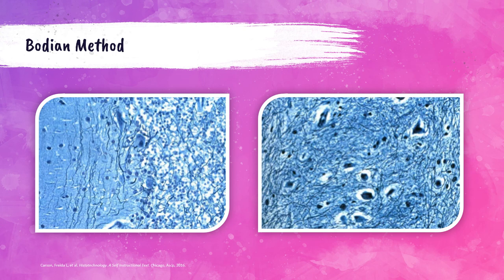A photo with the aniline blue counterstain shows a cerebellum tissue Bodian stained: nerve fibers and nuclei are visible in black. An example of overstaining with the aniline blue counterstain shows that the contrast between the background and the black-stained axons is lost — this is an unacceptable result. The properly stained slide on the left is acceptable; the overstained one on the right is not.